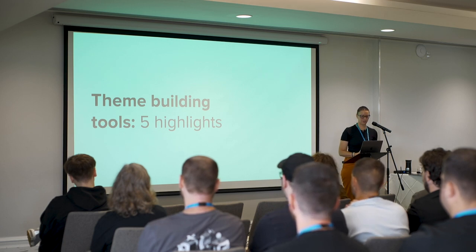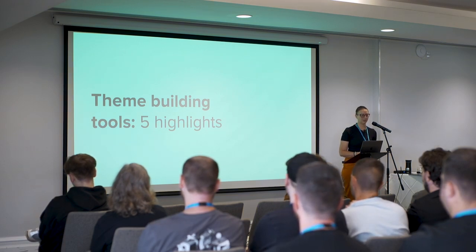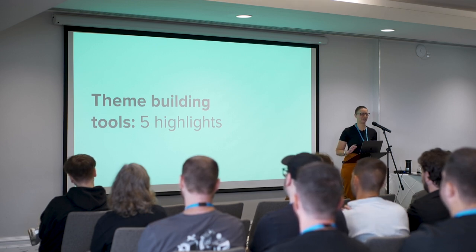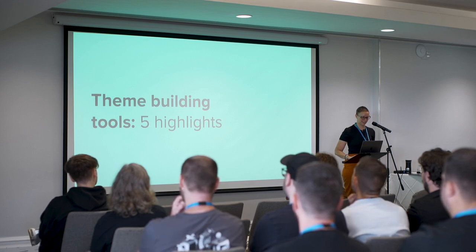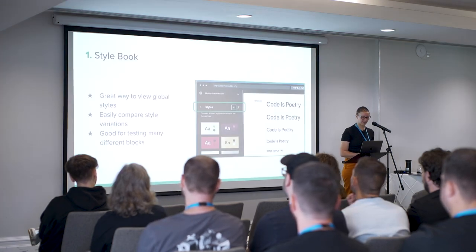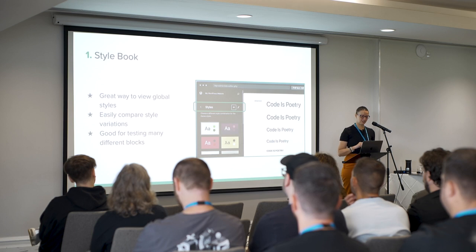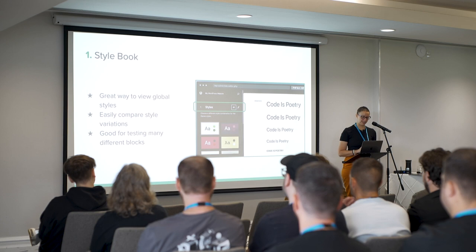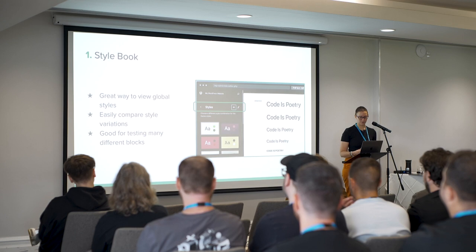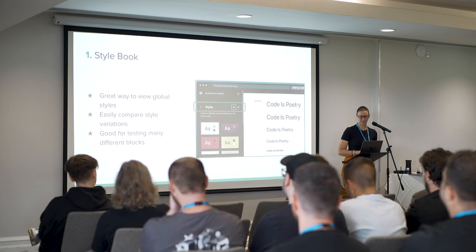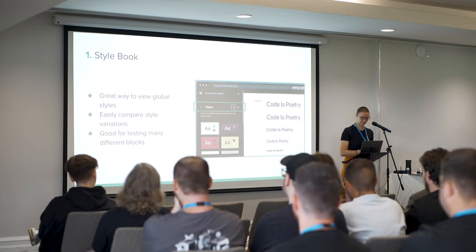Now I'm going to highlight a few design tools in the editor that I think are worth pointing out, including some not-so-obvious use cases. First up is the Style Book. To open it, go to the site editor, click on Styles, and then click the eye icon. This is a great way to view global styles in a single place and easily compare many different blocks all in one place — and also compare all the available style variations.